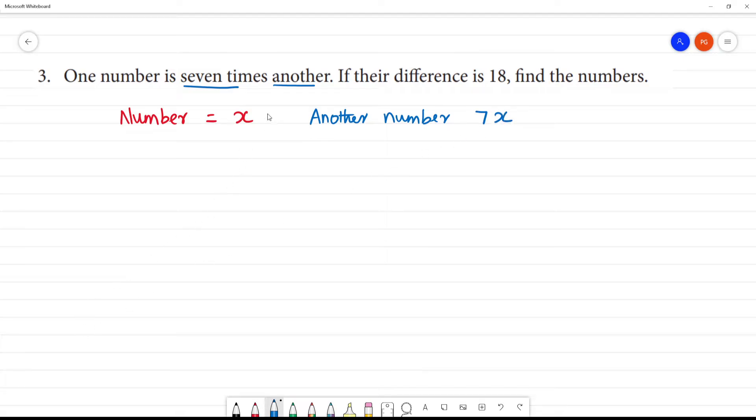If we look at what number is 7x, we can write 7 multiplied by x. If the difference is 18, that is 7x minus x is equal to 18.